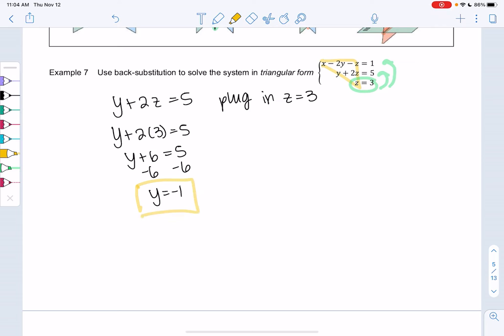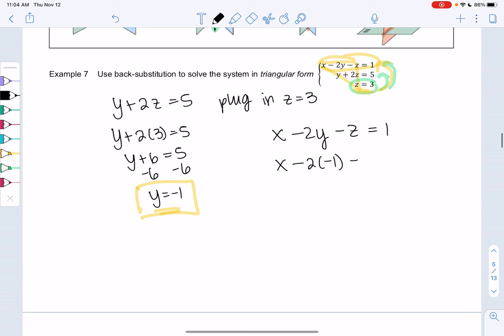And so now we know Z and Y, and we'll just back substitute one more time to find X. So we know that X minus 2Y minus Z is one, and then we'll just plug in Y and Z. So X minus two times negative one minus three equals one. X plus two minus three, or X minus one equals one. And we add one to both sides, and X is equal to two.